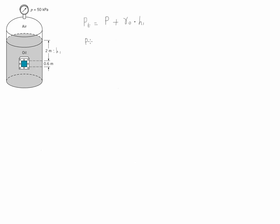Replacing values, we're going to have 50 kilopascals plus 9.8 kilonewtons per meter cubed, multiplied by the specific gravity of oil which is 0.9, and then multiplied by 2 meters. This is going to be equal to 67.64 kilopascals.